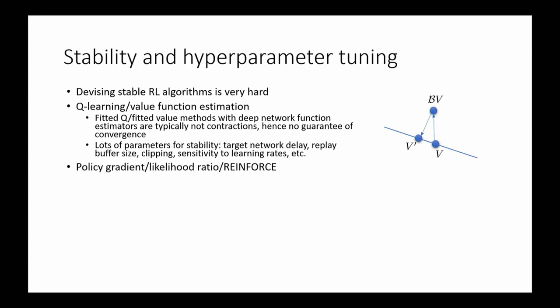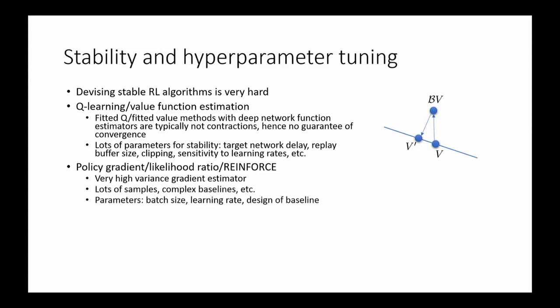Policy gradient methods are maybe a little better in the sense that you can construct reasonable convergence guarantees, but that comes at the cost of using very high variance estimators. In practice, if you want policy gradient methods to work well, you would typically still introduce some kind of value function — either as a baseline or as a critic — which imports all of the issues from value-based methods. Dealing with high variance requires careful parameter choices: learning rates, batch sizes, etc.